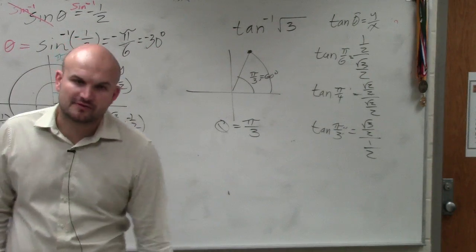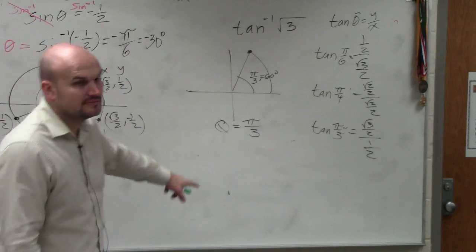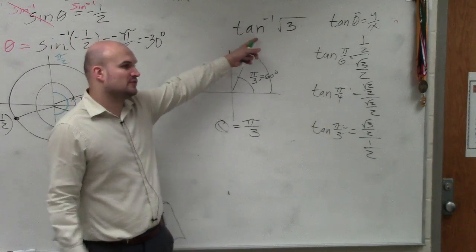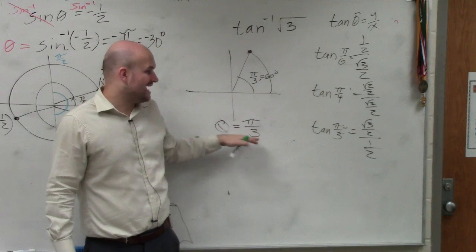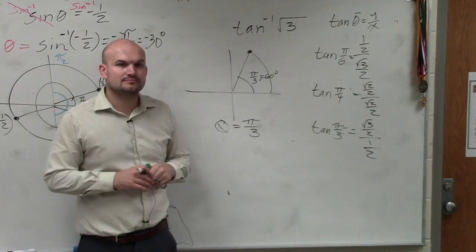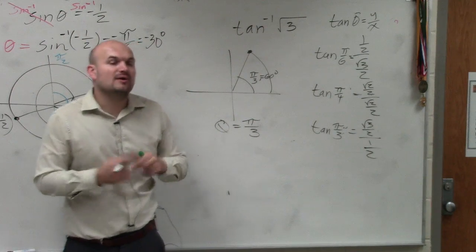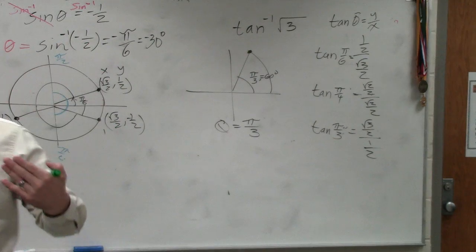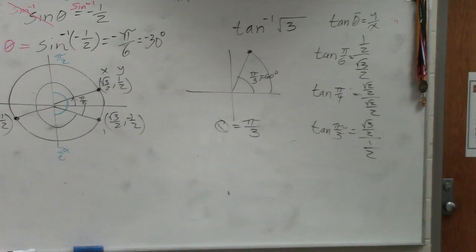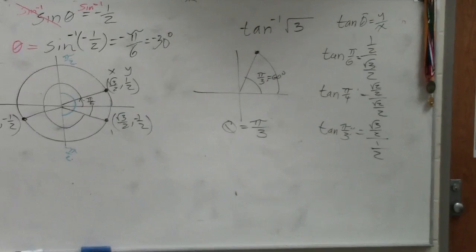So theta is pi over 3. That's the answer. So the inverse tangent of square root of 3 is the angle pi over 3, or 60 degrees. And what I'm trying to say is, if I'm asking for radians, which I'm going to be doing because that's what you guys need to make that mental shift of radians.